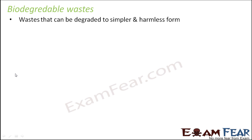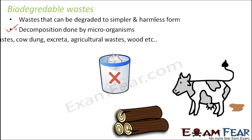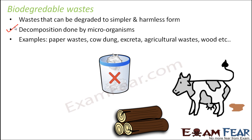This breakdown happens in nature with the help of microorganisms — tiny organisms that help in decomposition. Decomposition means something is broken down into simpler, harmless forms. Examples of biodegradable wastes are paper wastes, cow dung, excreta, agricultural wastes such as husk and fiber, and wood.